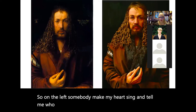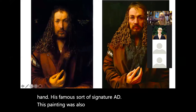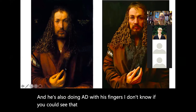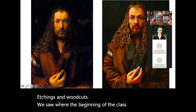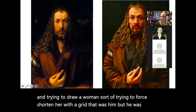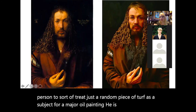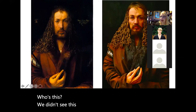On the left — the 'A' and 'D' should give you a hint — it's Albrecht Dürer. This painting was even recreated with Gary Oldman in it for Francis Ford Coppola's Dracula. Dürer is mostly known for his etchings and woodcuts — we saw him early in the class with the man drawing a woman using a grid for foreshortening. But he was also an excellent painter. He was the first to treat a random piece of turf as the subject of a major oil painting, and he did brilliant studies of bugs and engravings.